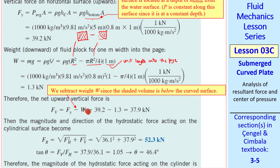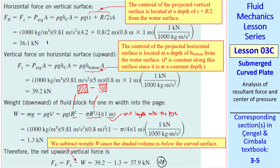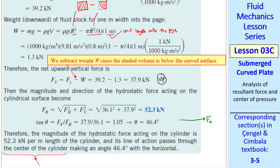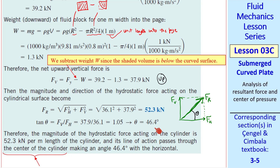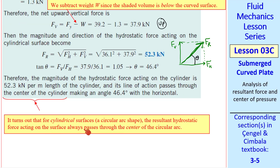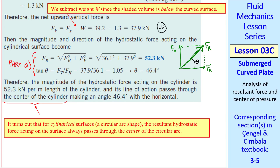Since Fy is up and W is down, we subtract: Fv = Fy − W = 37.9 kN upward. The horizontal force acts to the right. To get the net resultant force magnitude, we do a vector summation: Fr = √(Fh² + Fv²) = 52.3 kN. The angle can also easily be determined: tan θ = Fv / Fh, giving θ = 46.4°. And as mentioned, for cylindrical surfaces this resultant force acts through the center of the circular arc. That is the answer to Part A.